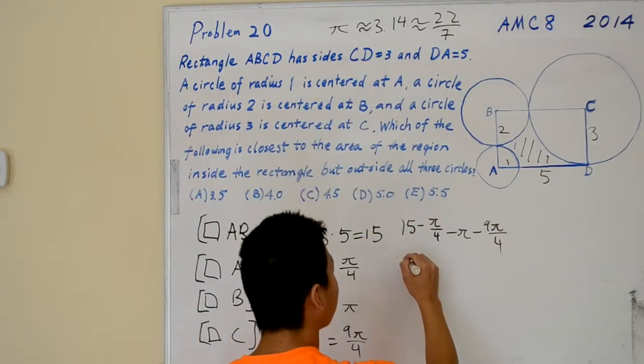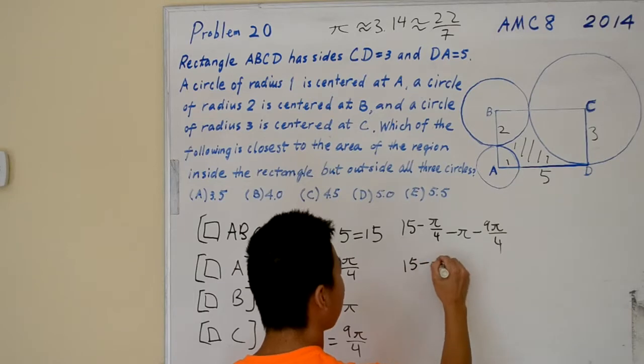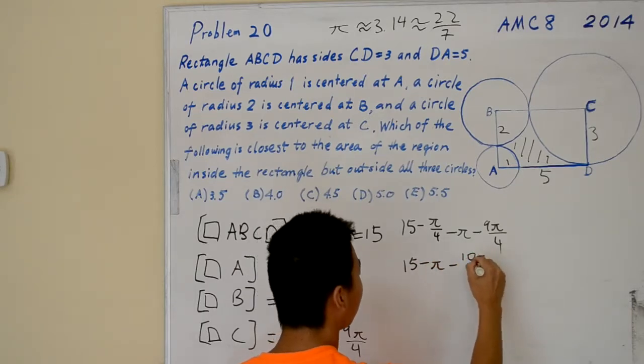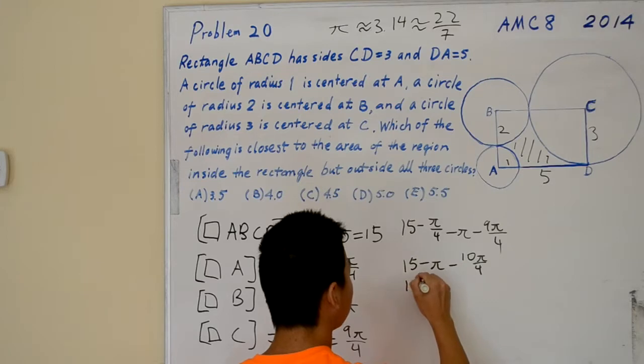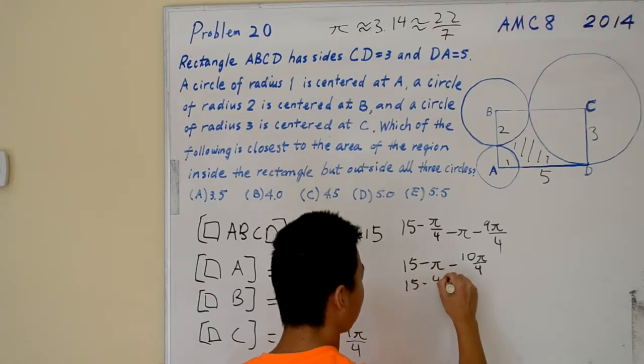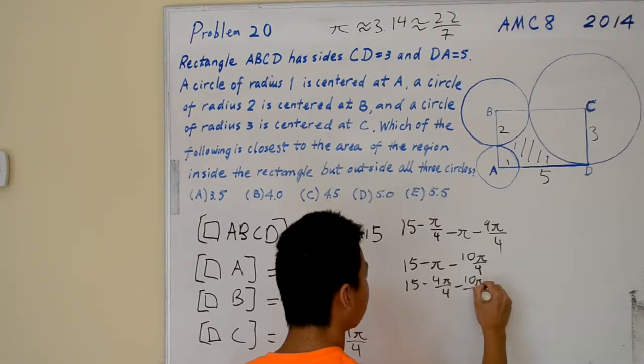15 minus pi minus 10 pi over 4. That's 15 minus 4 pi over 4 minus 10 pi over 4.